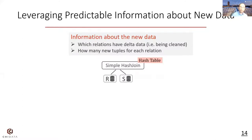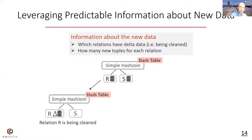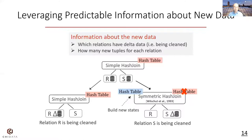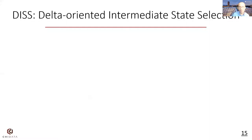This information is critical in selecting the right states to keep. Consider a simple hash join with the hash table as its state. If the new data comes from R, we keep this hash table because new tuples from R can probe it to output join results. However, if the new data comes from S, keeping this hash table does not help, because for every new tuple from S we have to re-scan table R to find matched tuples. Therefore, we consider converting this simple hash join into a symmetric one and build new states for processing the new data from S. We propose this delta-oriented intermediate state selection.